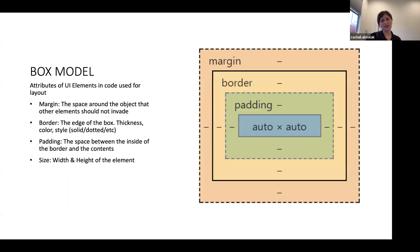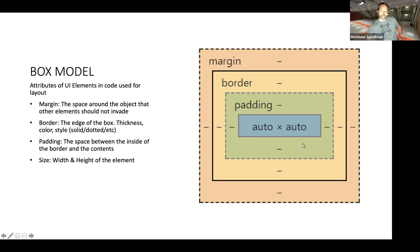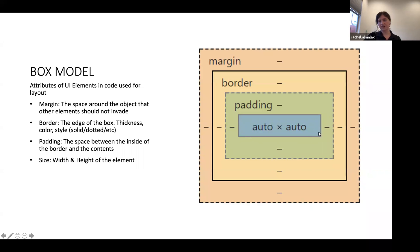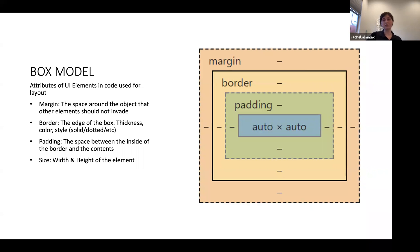That's mostly because in development, everything's based off of the box model, where you've got your size — your content is where the auto-times-auto is, which shows you your width times height. Then you've got padding, then whatever your border is, and a margin around your container. Pretty straightforward. Anyone who's used Chrome DevTools has seen this because this is just a screenshot from Chrome DevTools.